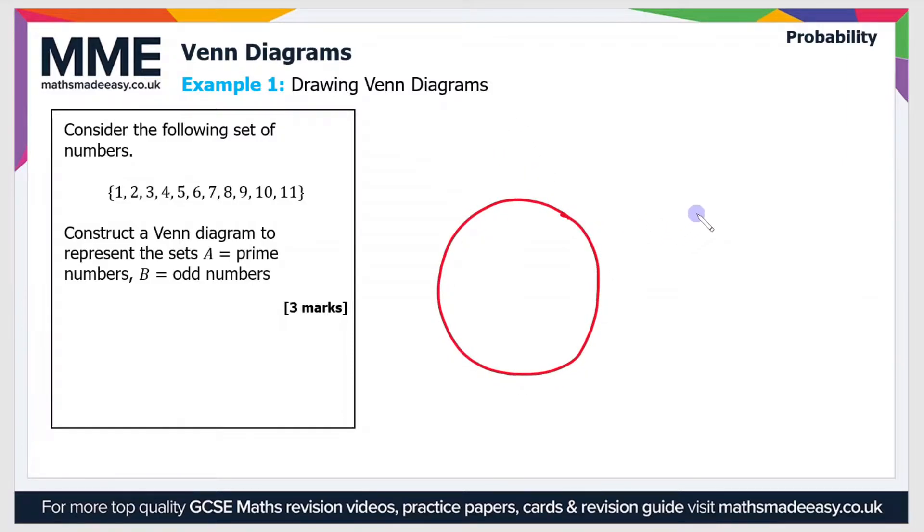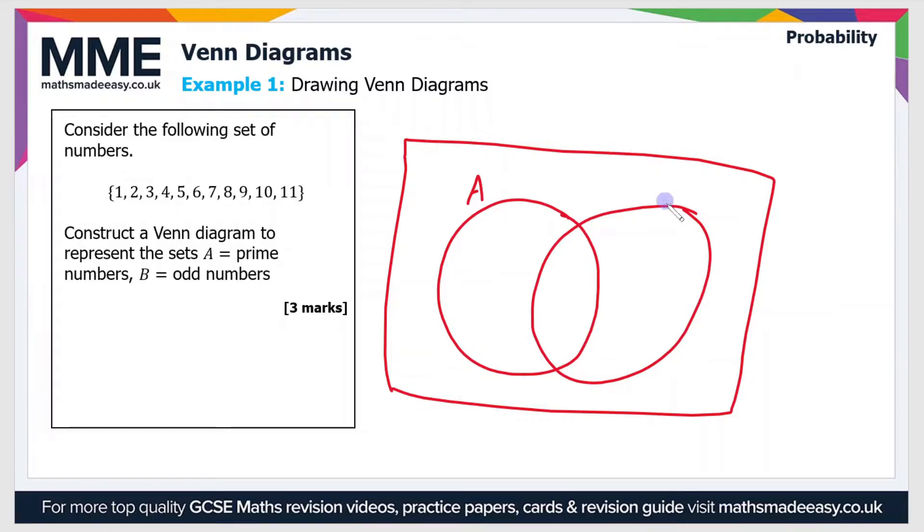So we have two circles like so with an intersection between them, and then remember to draw the box around the two. So that will include any that don't come into A or B. So we can label the two circles A and B - A is prime numbers and B is odd numbers.